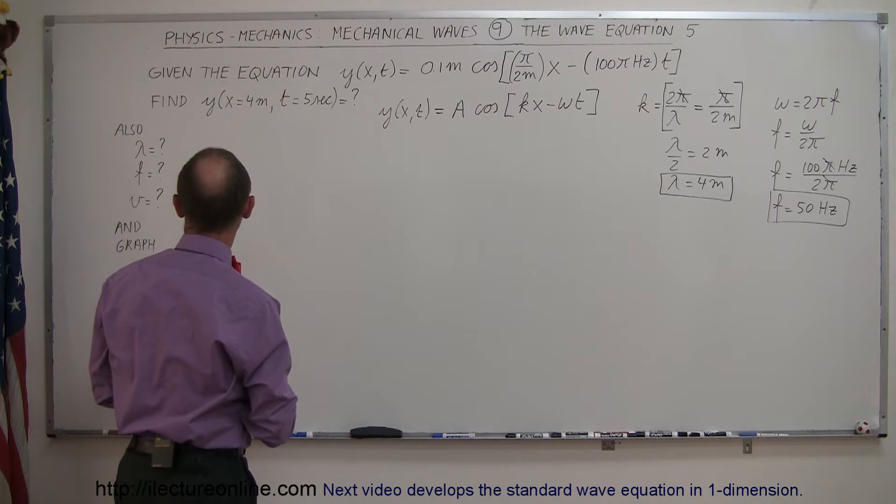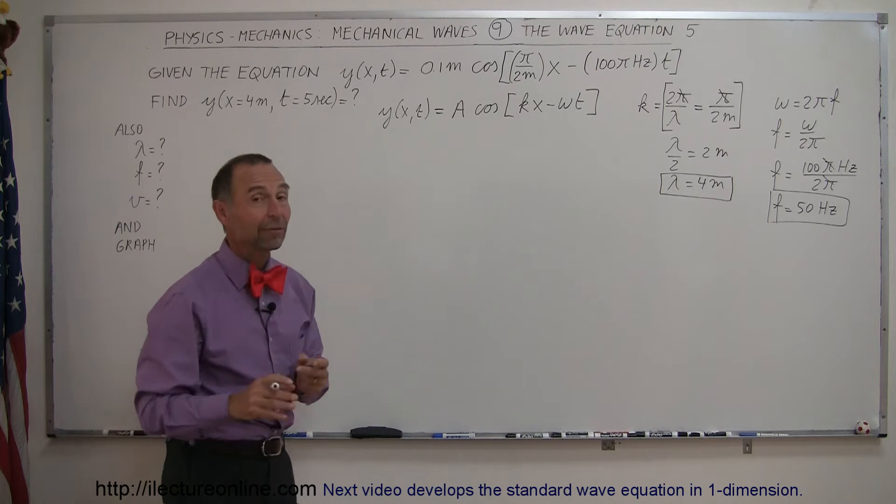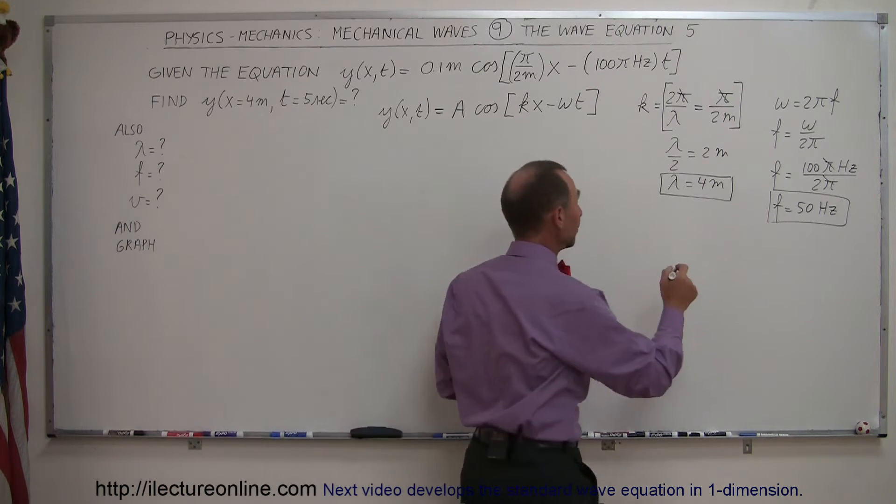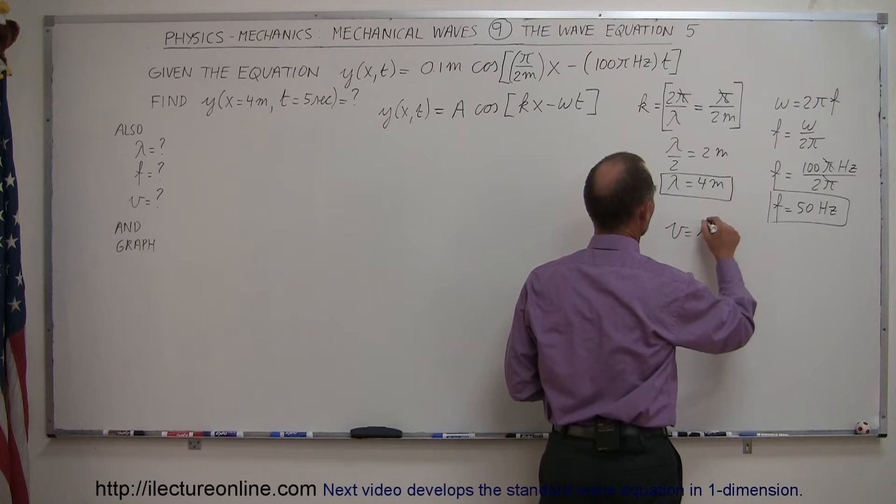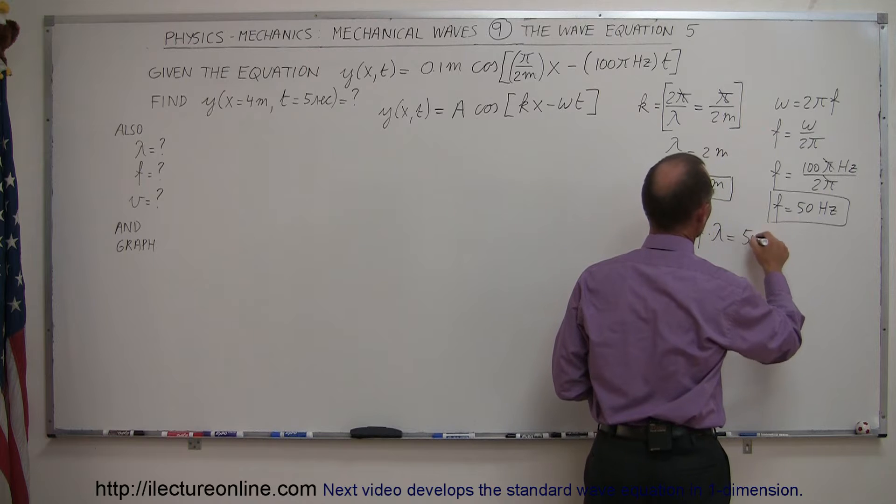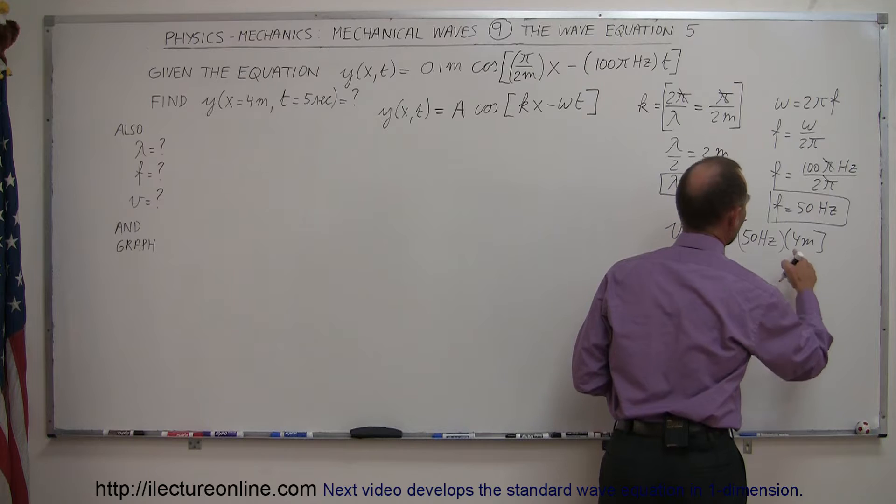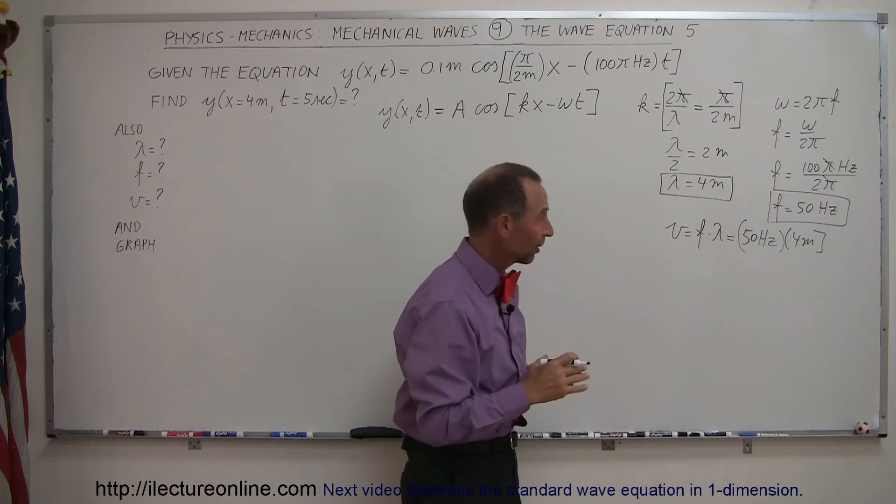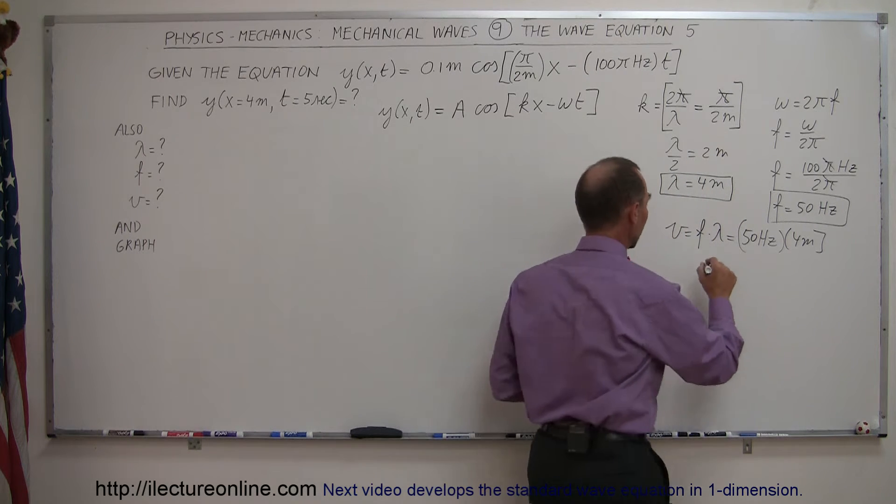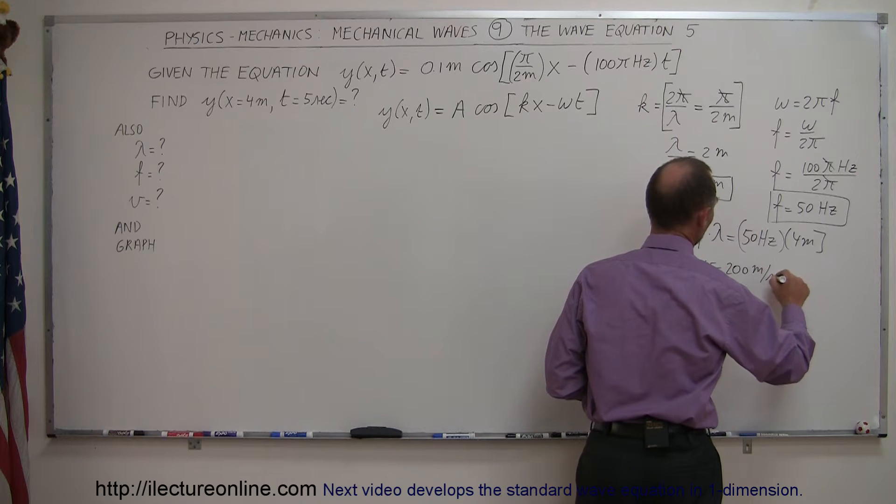The third item we're trying to find is the velocity. Once we have the frequency and the wavelength, velocity is pretty easy. Velocity equals the frequency times the wavelength. The frequency is 50 hertz, the wavelength is 4 meters. Remember, hertz is 1 over seconds, so 4 times 50 is 200. The velocity of this wave is 200 meters per second.